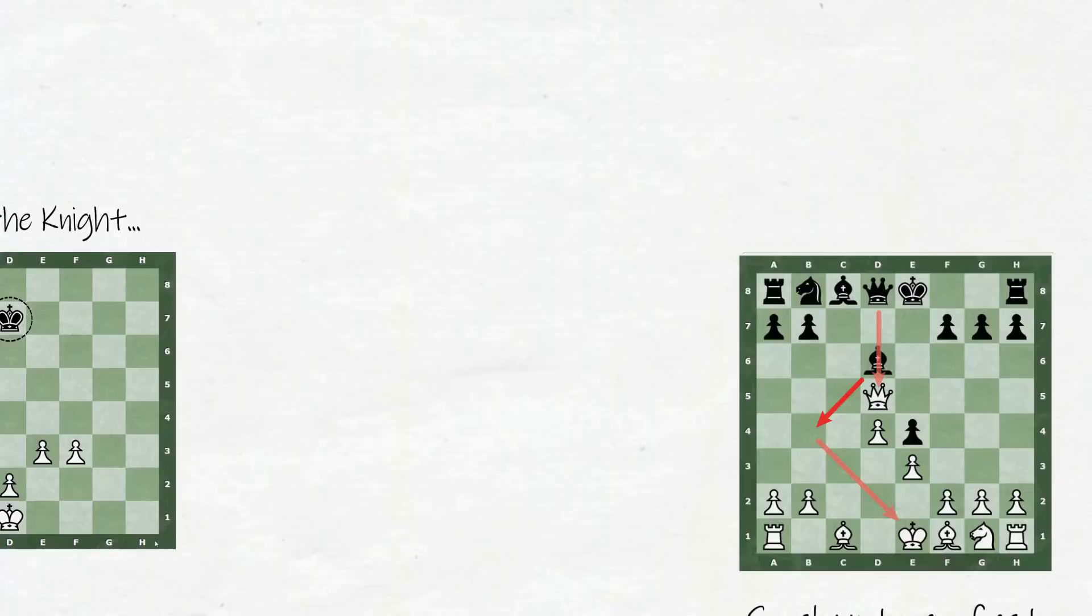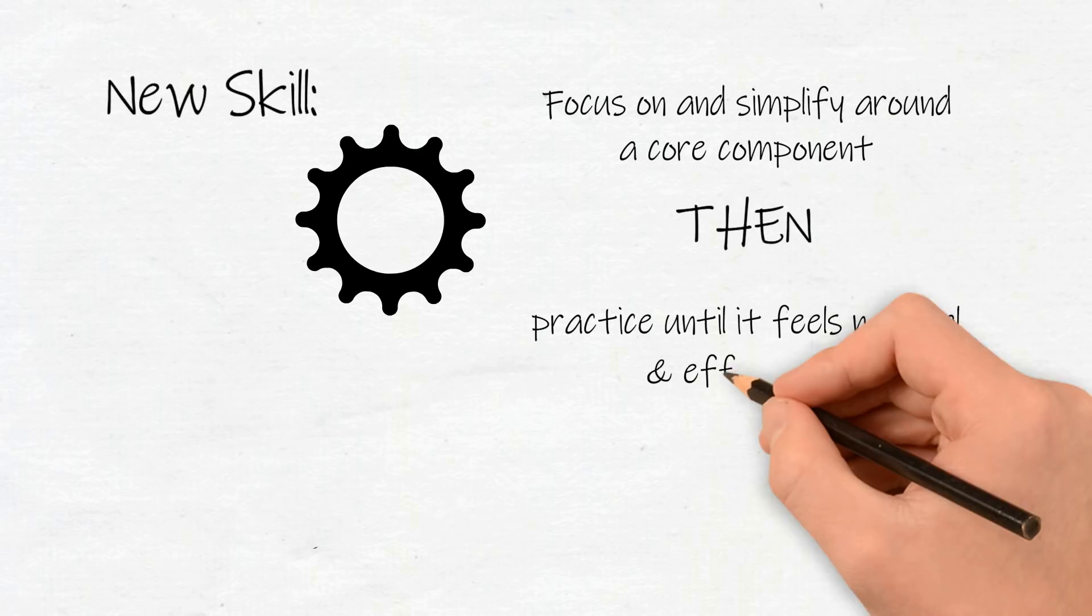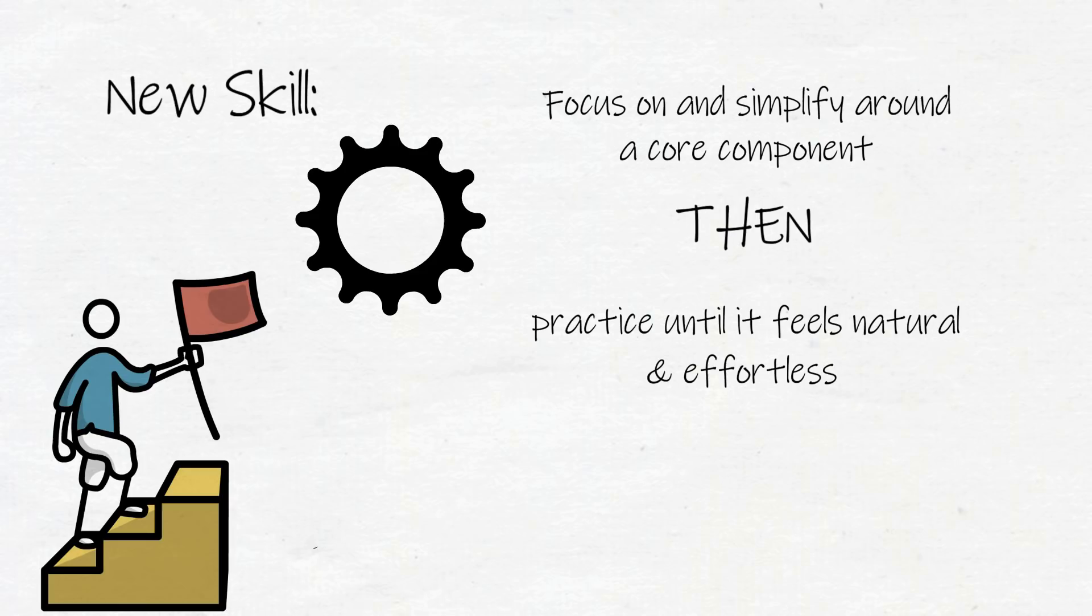To get a feel for the fundamentals of any skill, focus on one core component and practice simple variations, like Josh practiced different chess positions with the knight. Don't stop until that component feels natural or the movement you're practicing feels effortless. Only then start laying on more complexity.